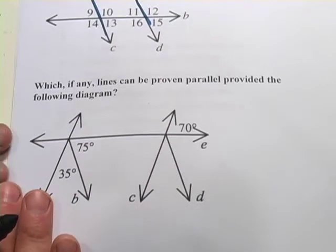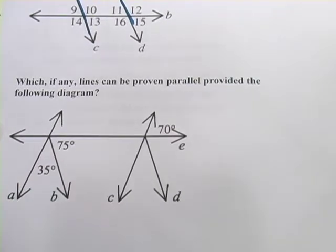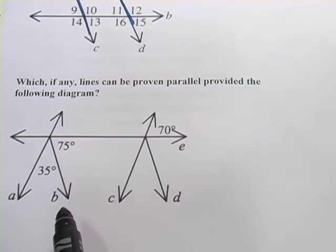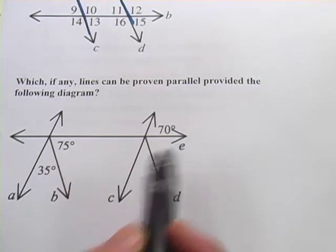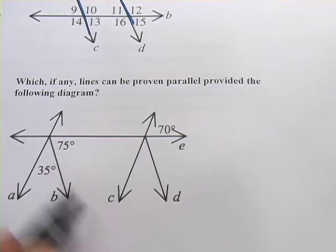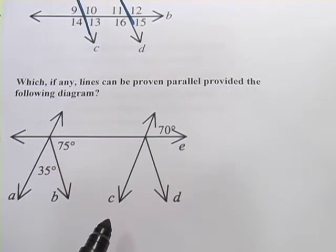All right, let's look at another one. So this looks a little complicated at first, but it's not too hard. Which, if any, lines can be proven parallel provided the following diagram. And we see this line here, and then we've got a couple of lines here, and then also these little legs sticking down, these rays coming out from the intersection.